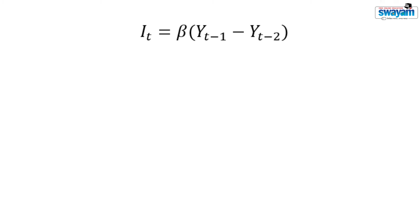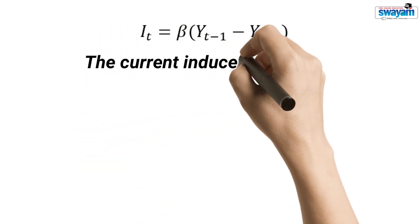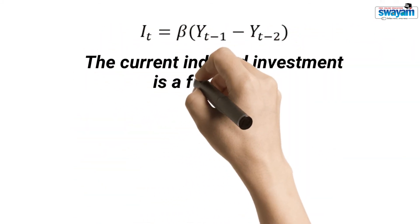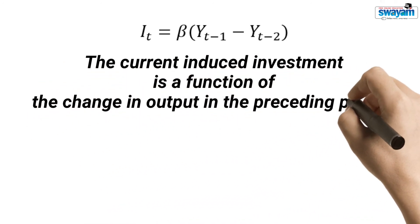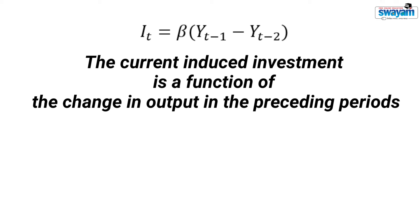How will you interpret this equation? I is the induced investment and Y is the income. This equation may be interpreted as the current induced investment is a function of the change in output in the previous period.